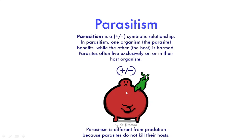Some adaptations of parasites include the loss of some sense organs, since they move along with the host and don't need them. They have adhesive parts to attach to the host and no digestive system, since they simply suck nutrients. They also have very high reproductive capacity. Good examples of parasites are the liver fluke, which grows upon cattle, and Plasmodium — the malarial parasite — which feeds upon the blood of humans.